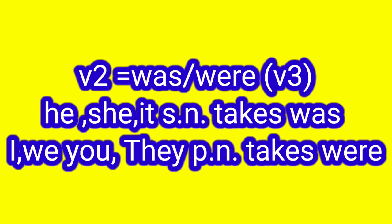Here, in simple past tense, V2 is changed into was/were plus V3. And here, the subject — each singular noun — takes 'was', and I, we, you, they, and plural nouns take 'were'. Each singular noun takes 'was'; I, we, you, they, and plural nouns take 'were'. Please remember this also.